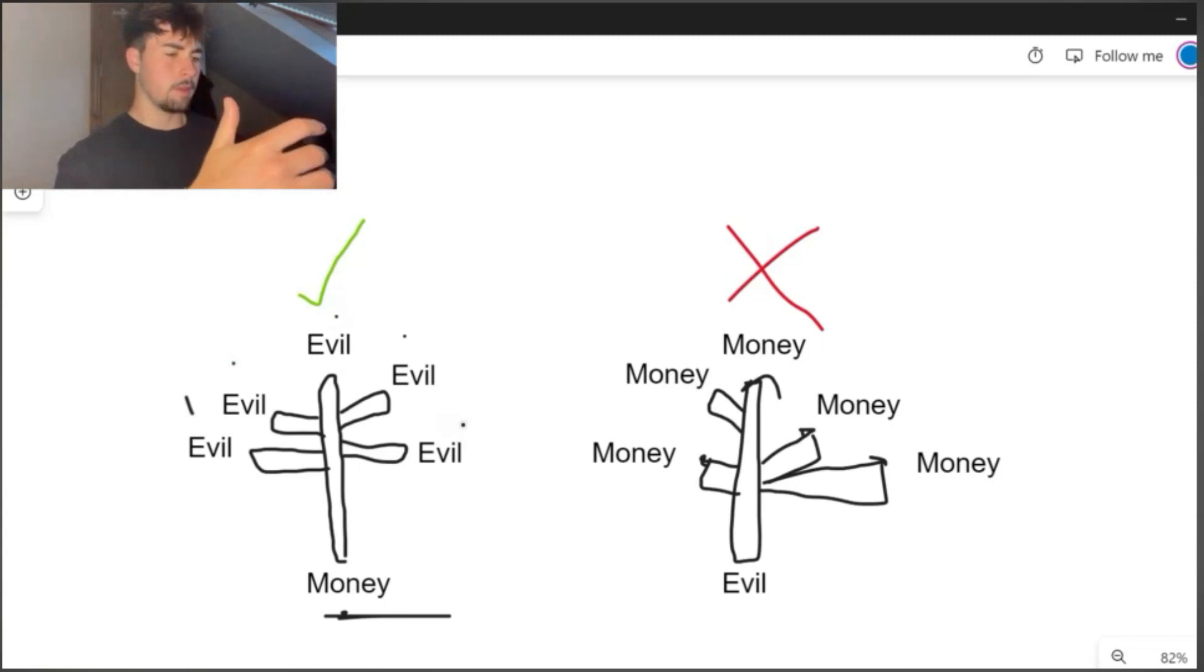For example, you've got an evil act like the Holocaust and the concentration camps. That's an act of evil. People may argue what Putin is doing with Ukraine, that's an act of evil.